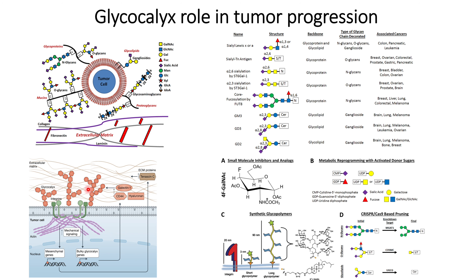The glycocalyx layer helps in tumor progression because in tumor cells it has a higher thickness compared to normal glycocalyx. Because of this higher thickness, it interacts with the ECM more easily, and the resulting mechanical forces are transduced within the cells, causing mechanical signaling and intracellular signaling activations.